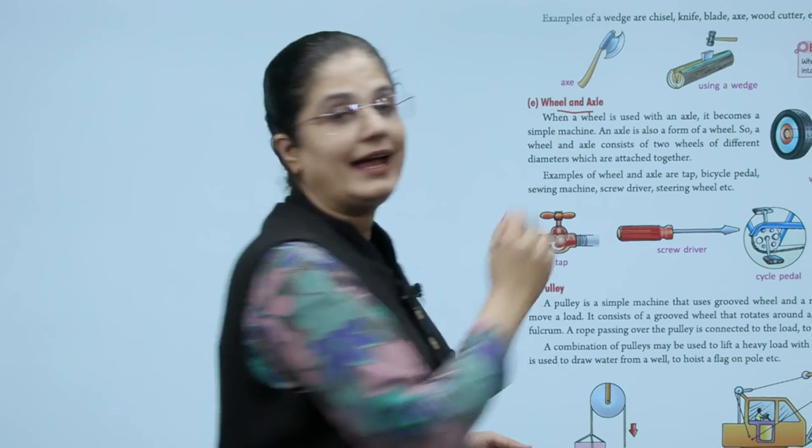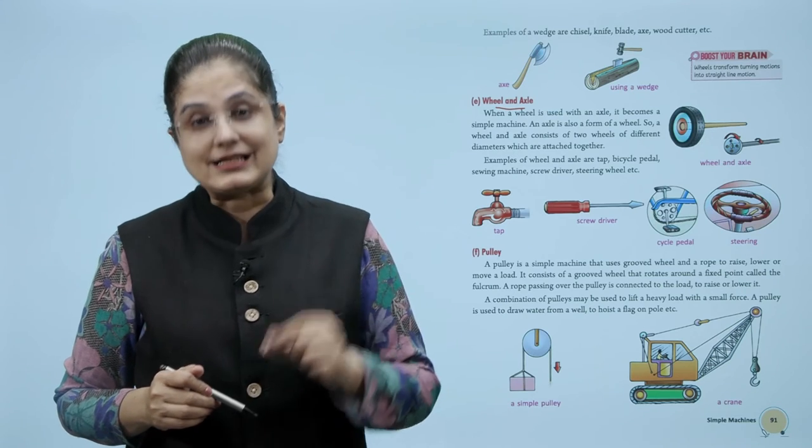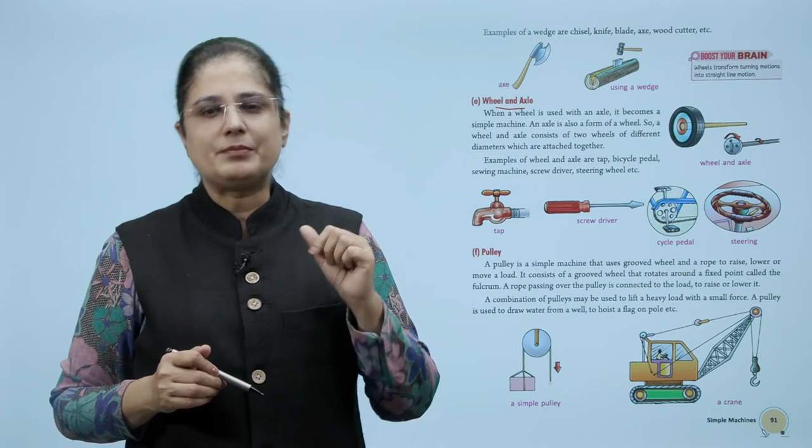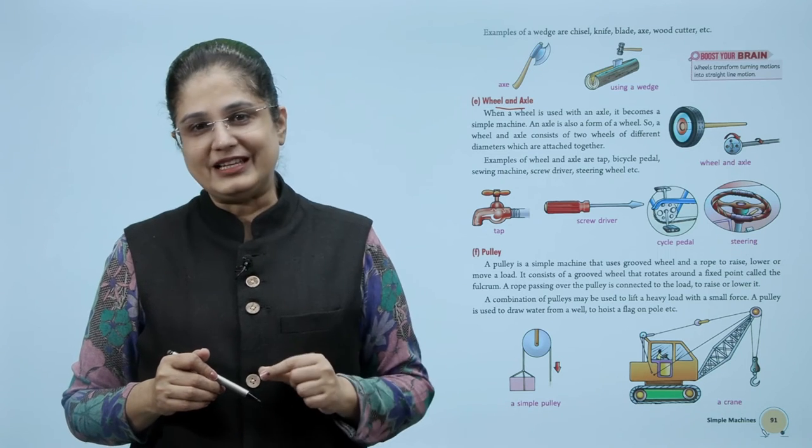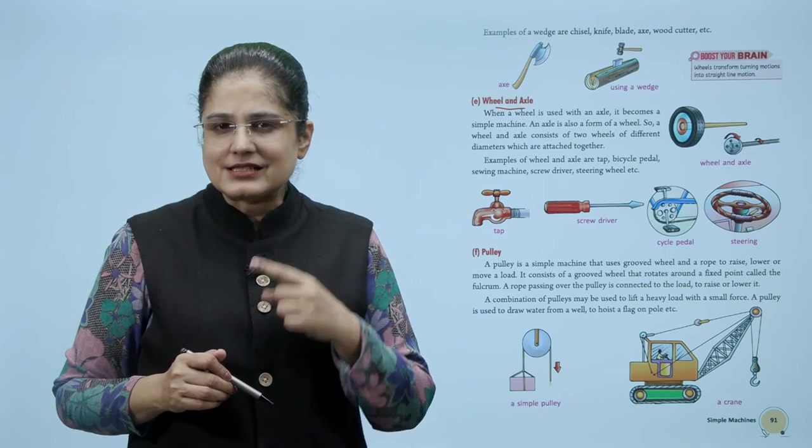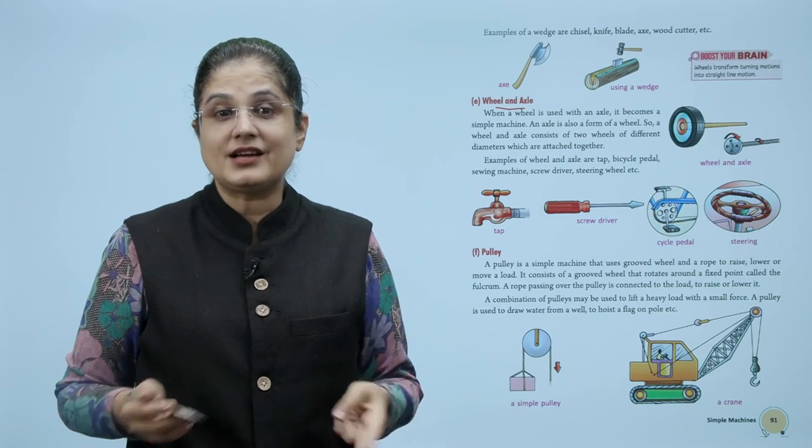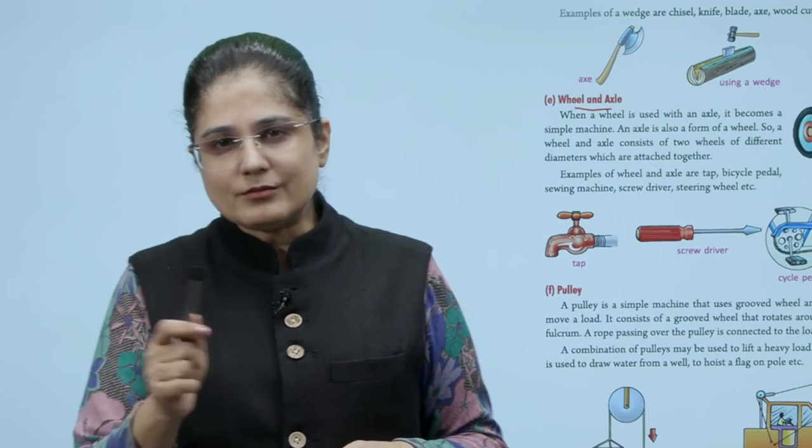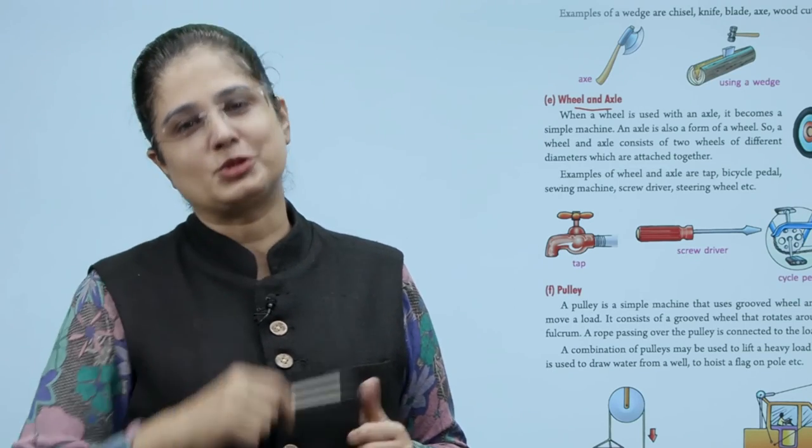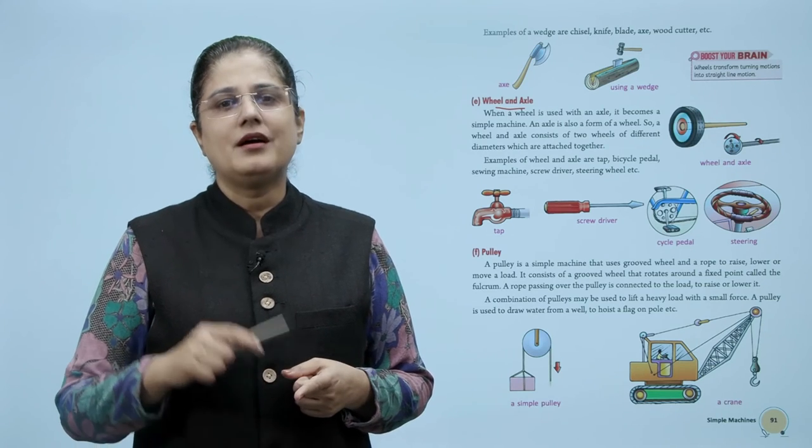Let us now study wheel and axle. When a wheel is used with an axle, it becomes a simple machine. A wheel and axle consists of two wheels of different diameters which are attached together. The wheel transforms turning motions into straight line motion. Examples of wheel and axle are tap, bicycle pedal, sewing machine, screwdriver, and steering wheel.